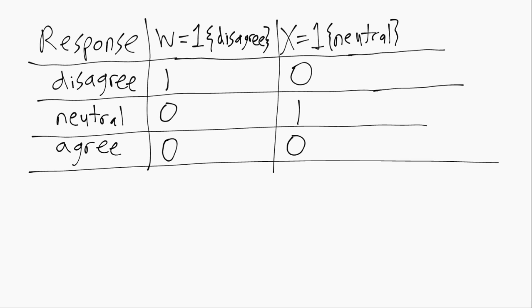And as a reminder we can interpret, for example, the mean of random variable w as the probability that w equals one because w is a binary variable, which is the same as the probability that the response is disagree.